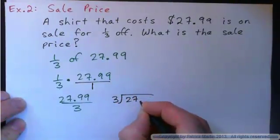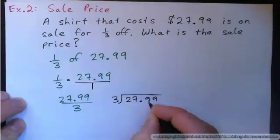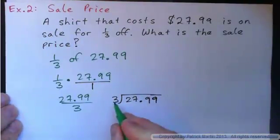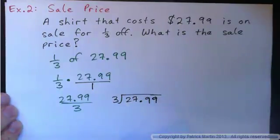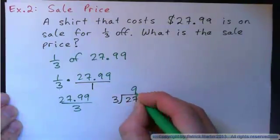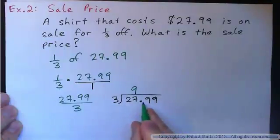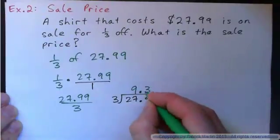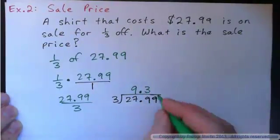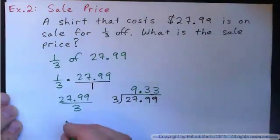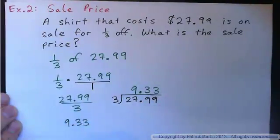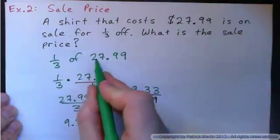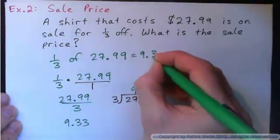Three into twenty-seven point nine nine — what does that give you? Three into twenty-seven goes nine times. Put the decimal point up here. Three into nine goes three times. Three into nine goes three times. So we get nine thirty-three. What we found is one-third of twenty-seven ninety-nine is nine dollars thirty-three.